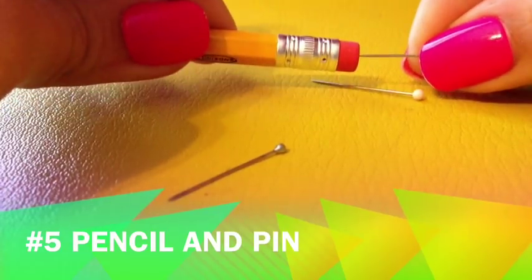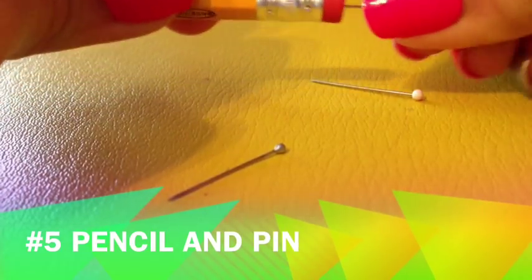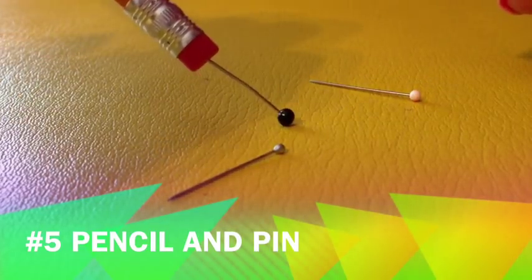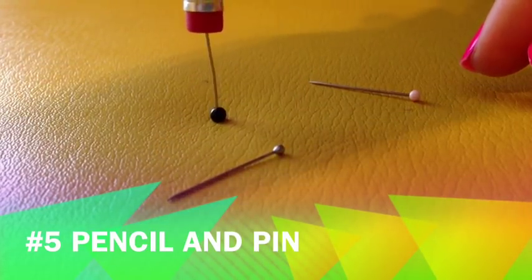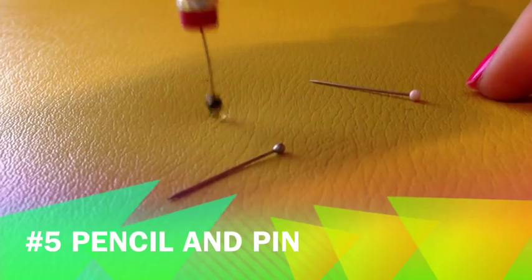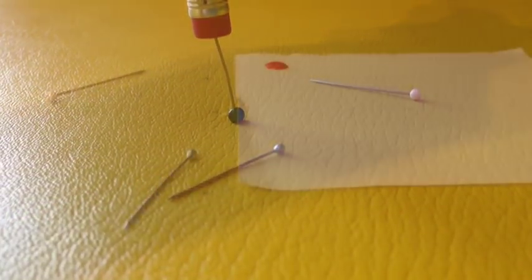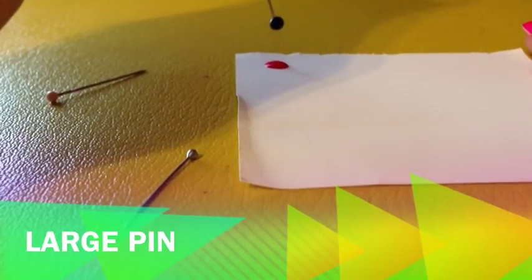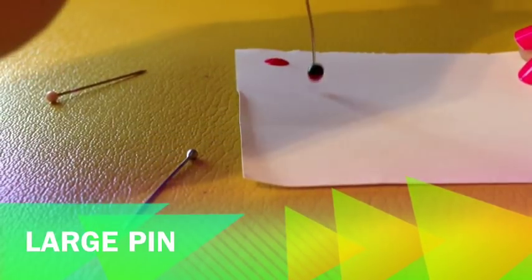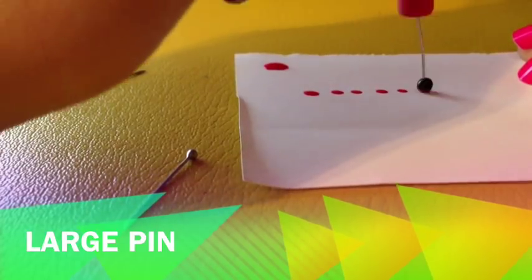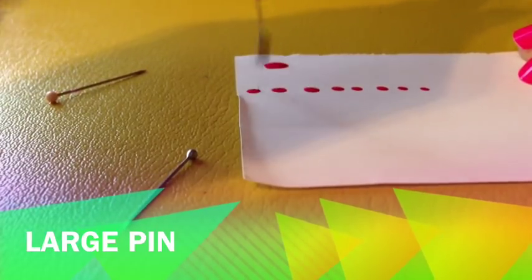So what you do is you take the pin and you basically just stab it into the eraser. This looks a lot like the dotting tools that you would buy at the store because they're like a rod with the ball at the end so this is pretty much what it is. Here I'll show you what the large pin dots look like. This is the one I use most often. I just find that this is the size that I like to use the most.